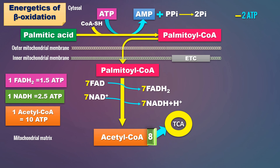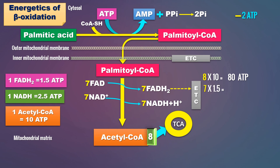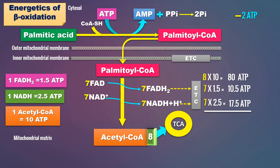Now we calculate ATP production per complete oxidation of palmitic acid. Eight acetyl-CoA gives 8 multiplied by 10, which equals 80 ATP. The reducing equivalents generated within beta oxidation are 7 FADH2 and 7 NADH. Seven FADH2 multiplied by 1.5 gives 10.5 ATP. Seven NADH multiplied by 2.5 gives 17.5 ATP. So the total ATPs produced is 108 ATP.